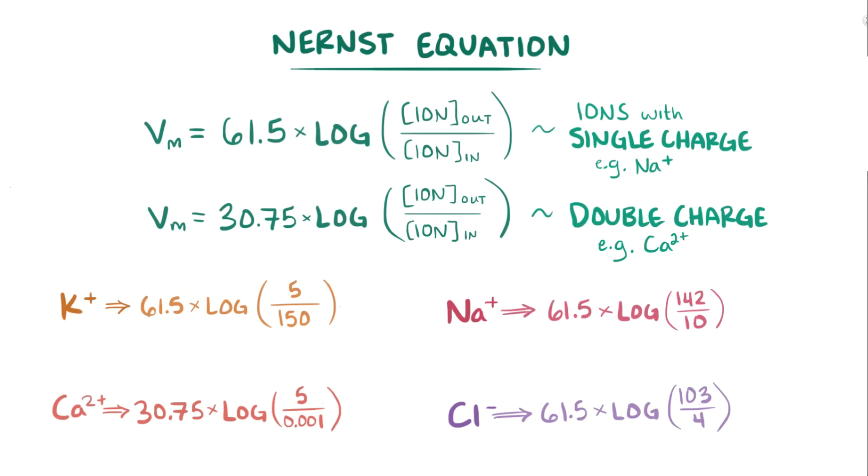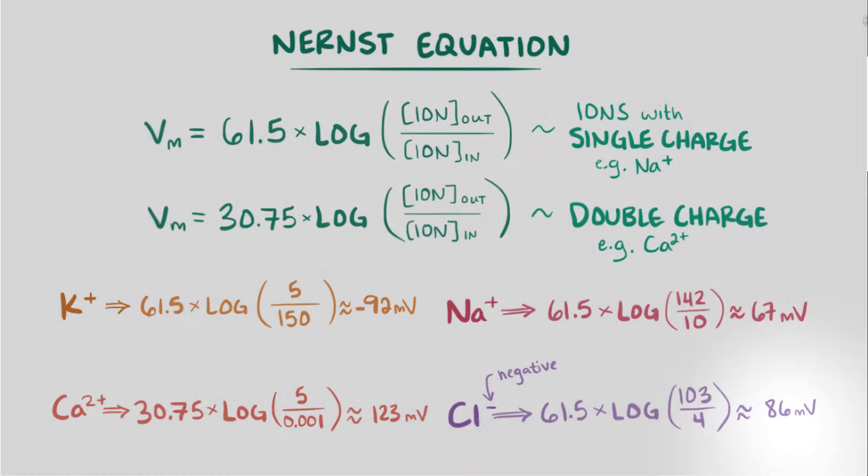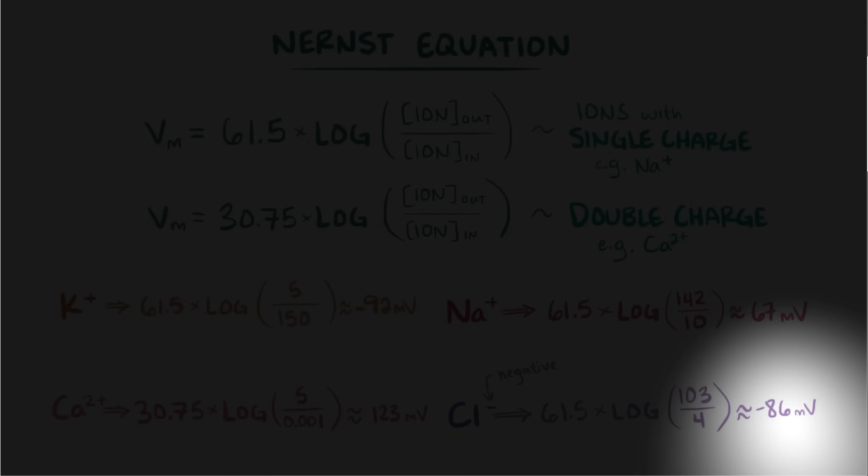Plugging those into the formula, we get equilibrium potentials of negative 92 mV, positive 67 mV, positive 86 mV, and positive 123 mV. One thing to note though, is that since chloride ion is negative, the equilibrium potential actually gets flipped, so it's actually negative 86 mV.